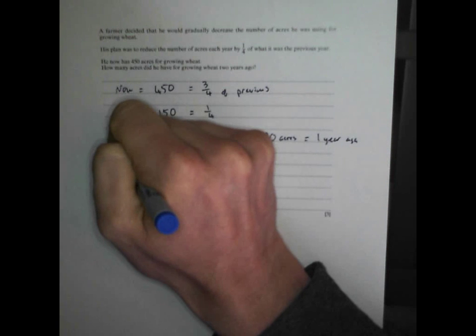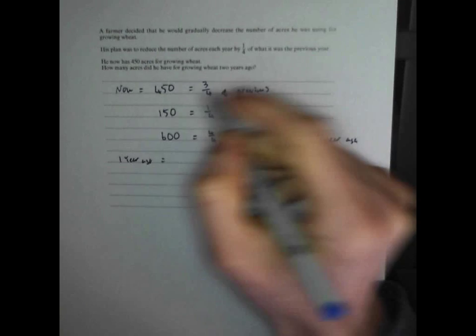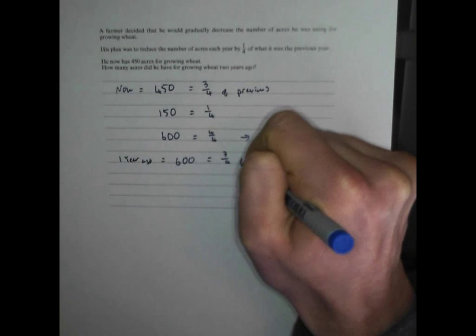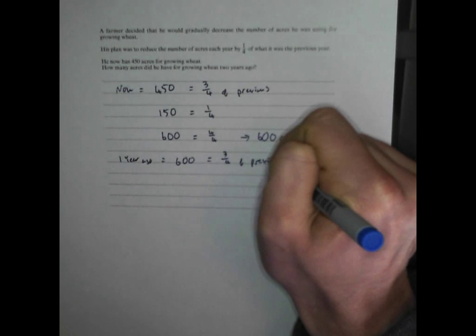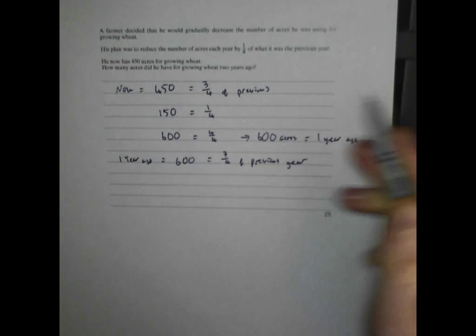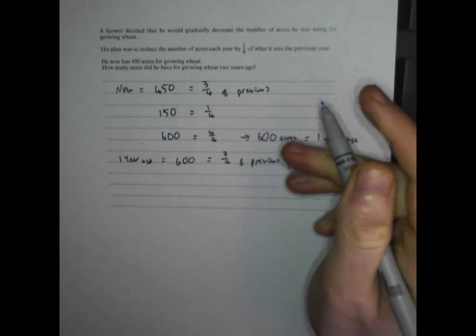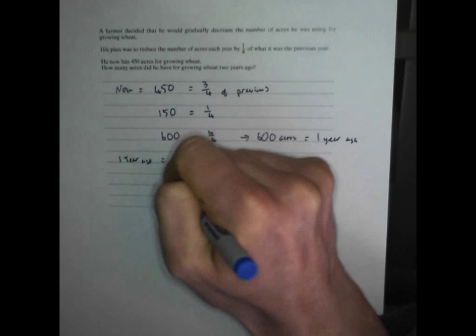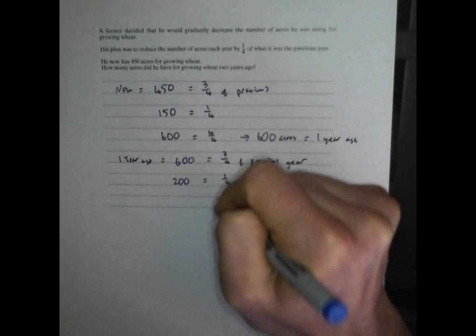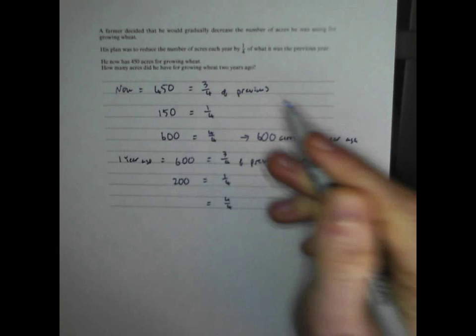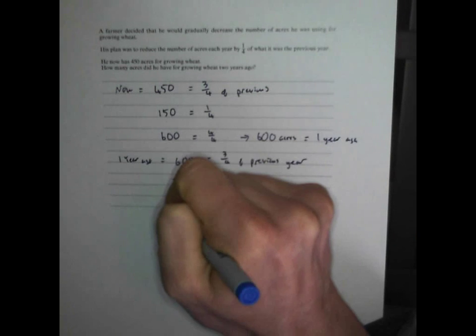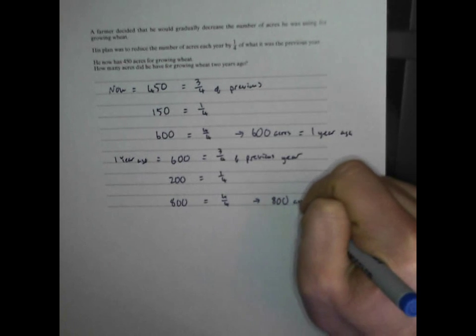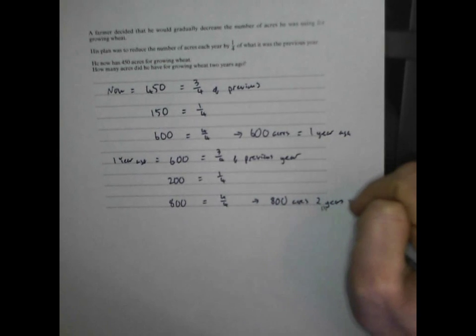So now let's just do the same. So one year ago, he had 600. And that must be equal to three quarters of the previous year. Same thing, because he takes a quarter off each year. So if three quarters is 600, what's one quarter? Three quarters is 600. One quarter must be a third of that, which is 200. And what must a whole be? Four quarters, four lots of that must be 800. So I think he had 800 acres two years ago.